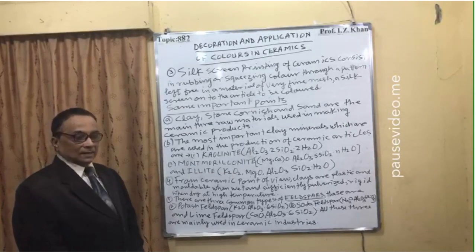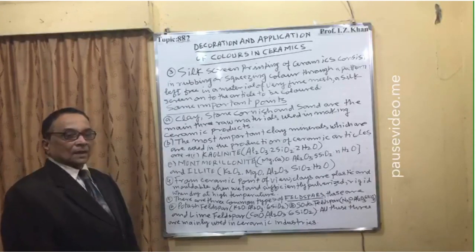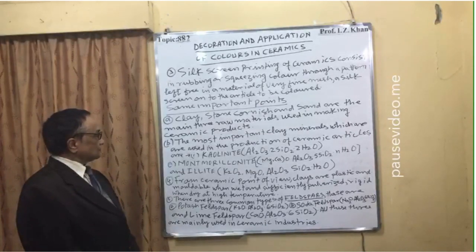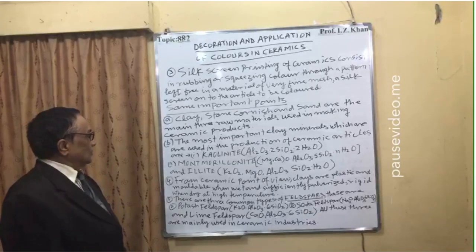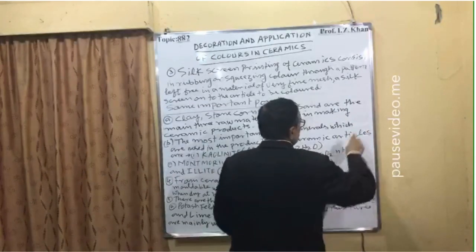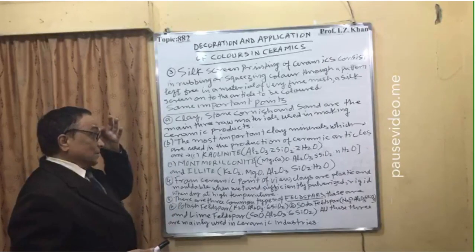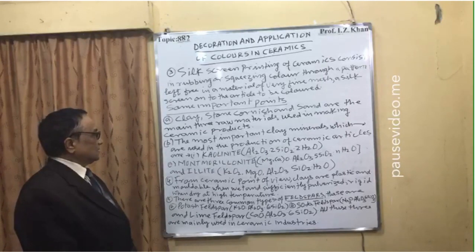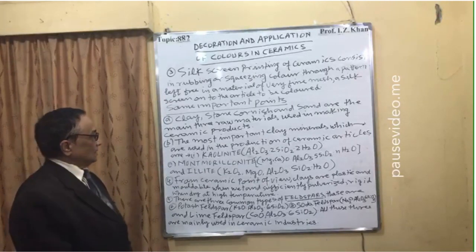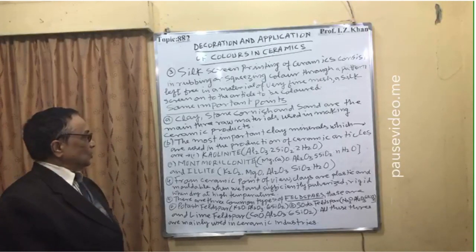Clay is plastic and can be molded; the second is silica/silicate; and the third is mineral rocks — all three are mixed. The most important clay minerals used in the production of ceramics are as follows. First is kaolinite, whose formula is Al2O3 · 2SiO2 · 2H2O. The second is montmorillonite, whose formula is MgO · Al2O3 · 5SiO2 with water of crystallization which may be 5, 6, 7, 8, or 10 molecules.